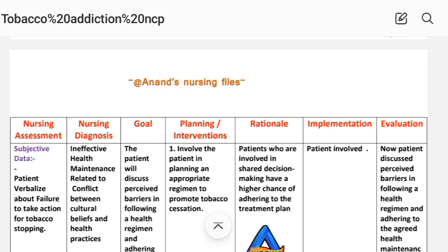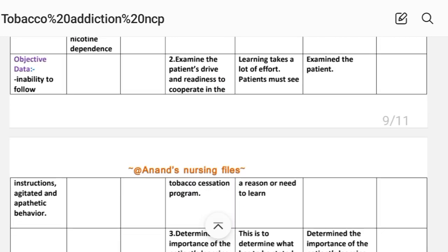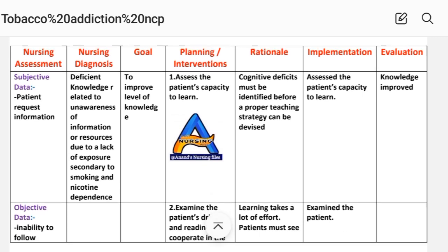Care plan number five — nursing assessment. Subjective data: patient requests for information. Objective data: inability to follow instructions, agitated and apathetic behavior. Nursing diagnosis: deficient knowledge related to unawareness of information or resources due to a lack of exposure, secondary to smoking and nicotine dependence. Goal: to improve level of knowledge. Intervention, first: assess the patient's capacity to learn. Rationale: cognitive factors must be identified before a proper teaching strategy can be devised. Implementation: assess the patient's capacity to learn.